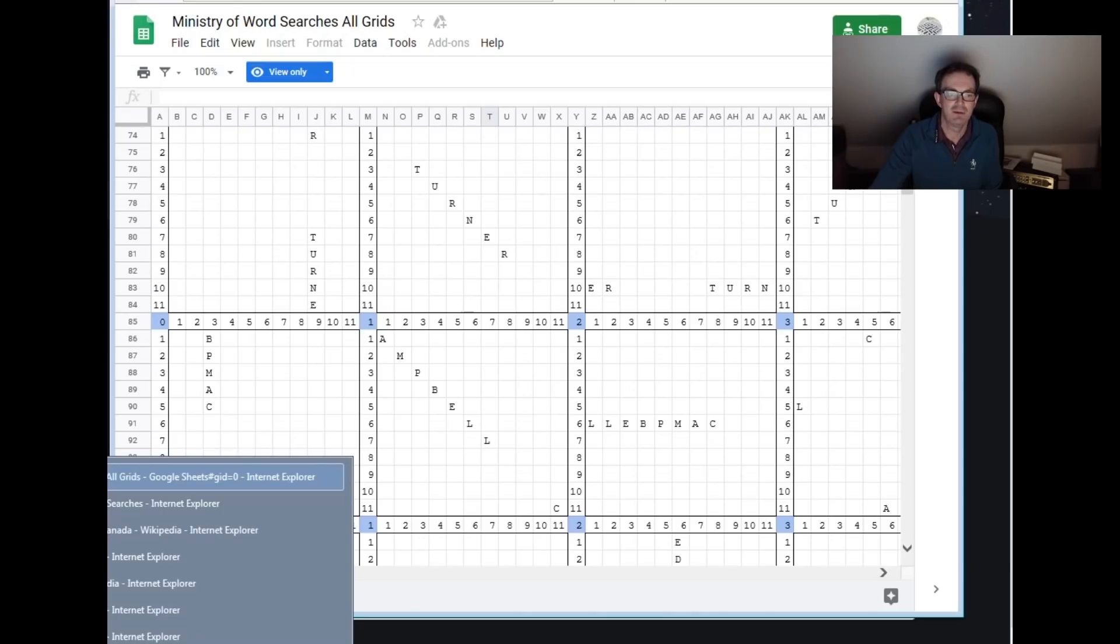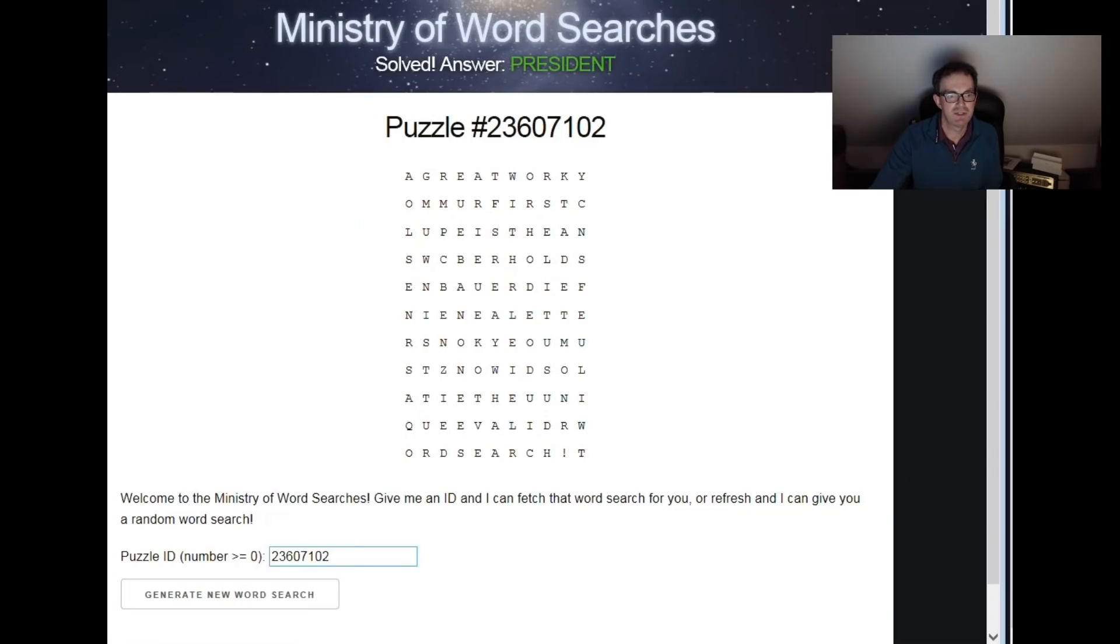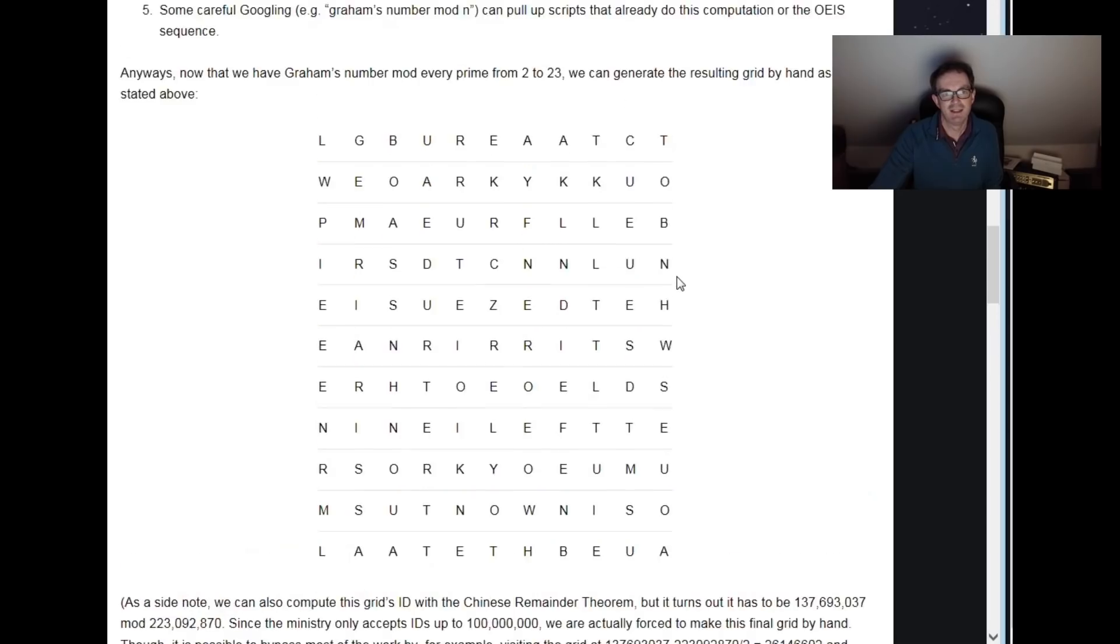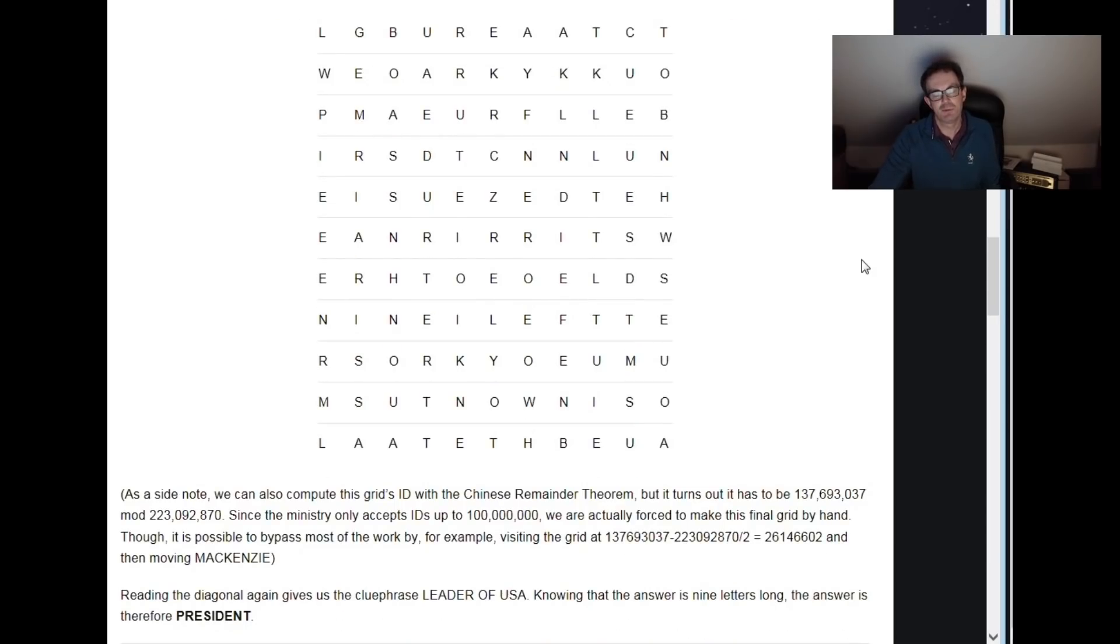So let me just show you where we got to. We calculated the final word search. Here it is on the screen. And if we look down the lead diagonal again, we get leader of USA. And we thought about that for a minute and worked out that a nine letter answer to that could be president, which turns out to be correct.